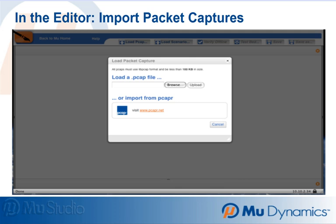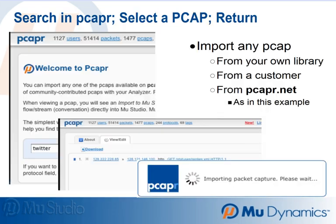including variations derived from those captured packets. Every test case generated from a test scenario will follow the same sequence of steps as in the original PCAP. In this example of testing DPI engines, we search for the string 'Twitter' in PCAPR because Twitter is representative of a new application that the DPI engine must be able to identify.